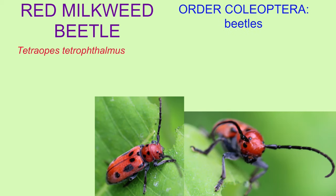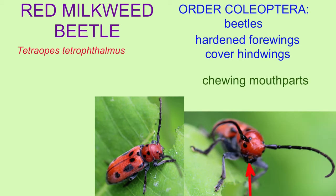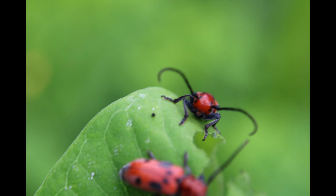These insects are classified in the order Coleoptera, the beetles, because their hardened forewings cover their hind wings. They have chewing mouthparts, and like other beetles, usually have between 3 and 5 tarsi and 11 antennal segments.